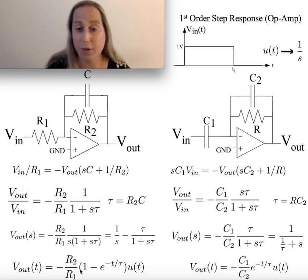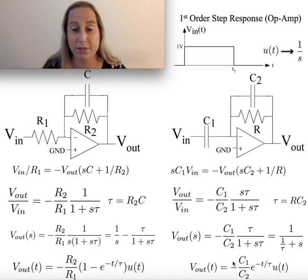And you get R2 over R1 times basically a 1 minus e to the minus t over tau. Again typical low pass step response. Whereas the high pass gives you something that would step instantaneously at t equal to zero and then decay off to zero.